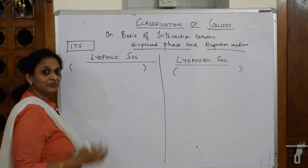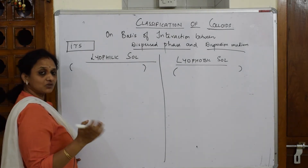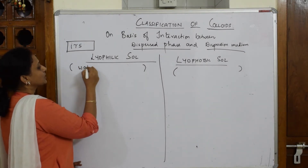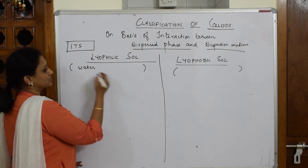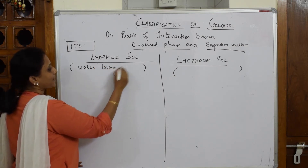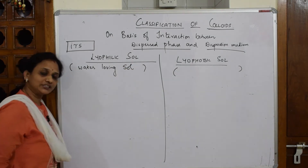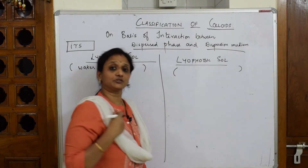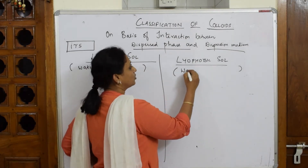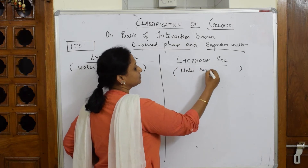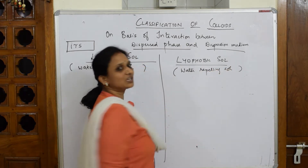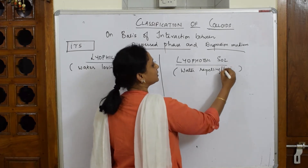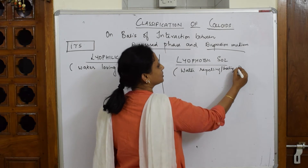Lyophilic: 'philic' means water-loving or solvent-loving, so Lyophilic sol is a water-loving or solvent-loving sol. Lyophobic: 'phobic' means fear or hatred of water, so Lyophobic sol is a water-repelling or water-hating sol.